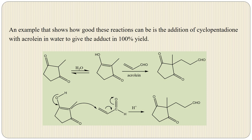Another example shows the addition of cyclopentadione with acrolein. Cyclopentadione in the presence of water is tautomerized to its enol form. When it reacts with acrolein, we get the product in 100% yield. The mechanism: this bond reforms a double bond with the carbonyl carbon, the enolate carbon attacks on the acrolein carbon, and on protonation we obtain the product.